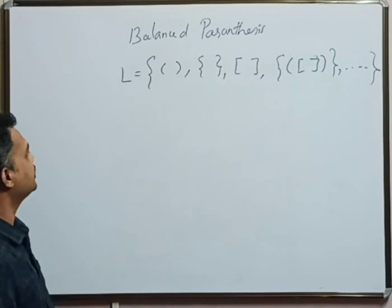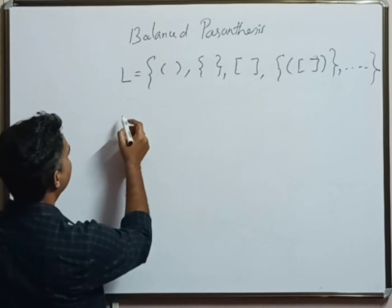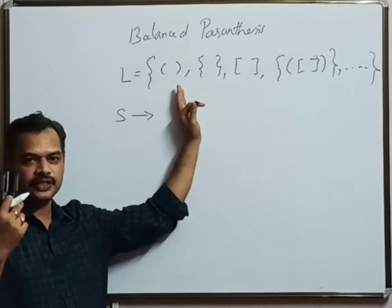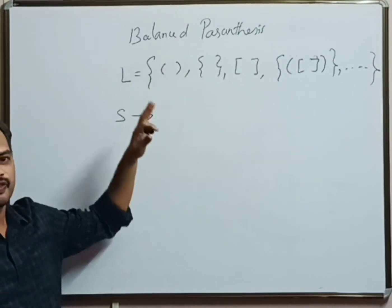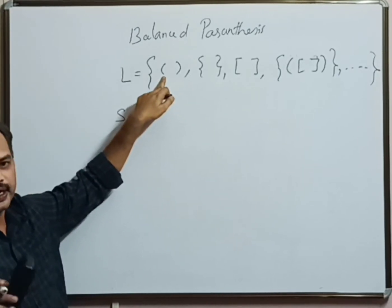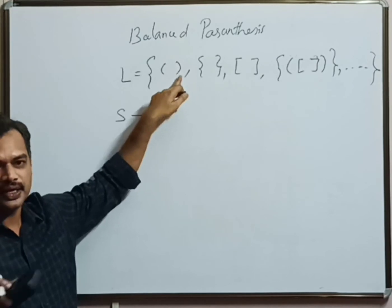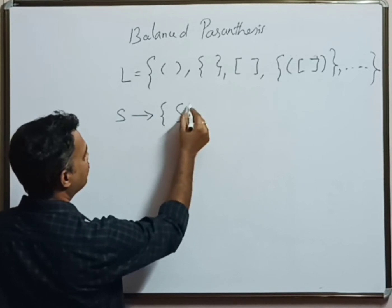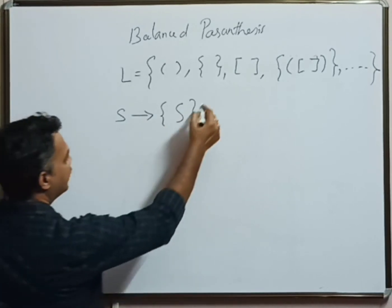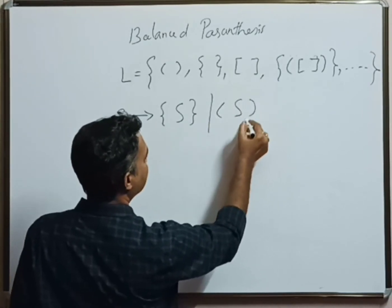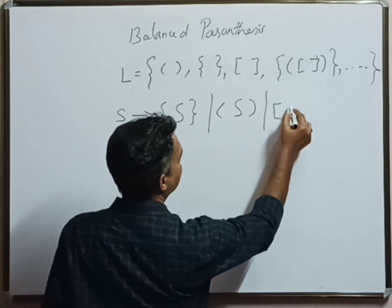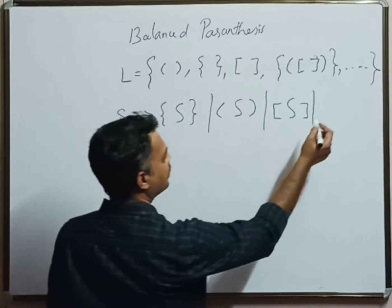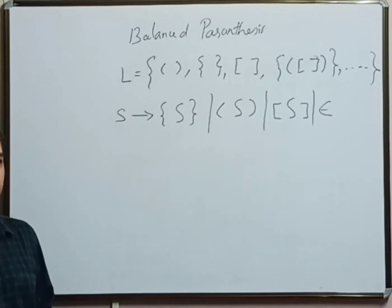So now let us design the CFG for this. Let us start with the start state. The solution is similar to the previous solution we discussed — there we said for every A there is a B. Now here we can say, for every open bracket of a particular kind, there should be a closing bracket of that same kind. Let us start with the flower bracket. This recursion has to be stopped, so in order to stop it, let us use epsilon.